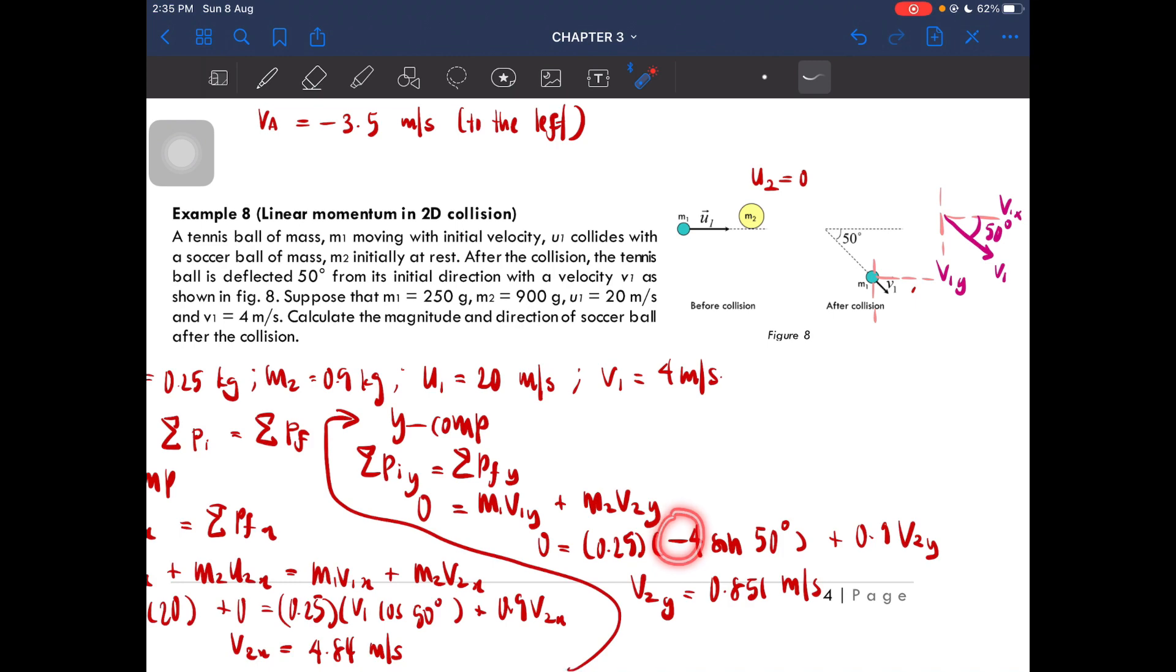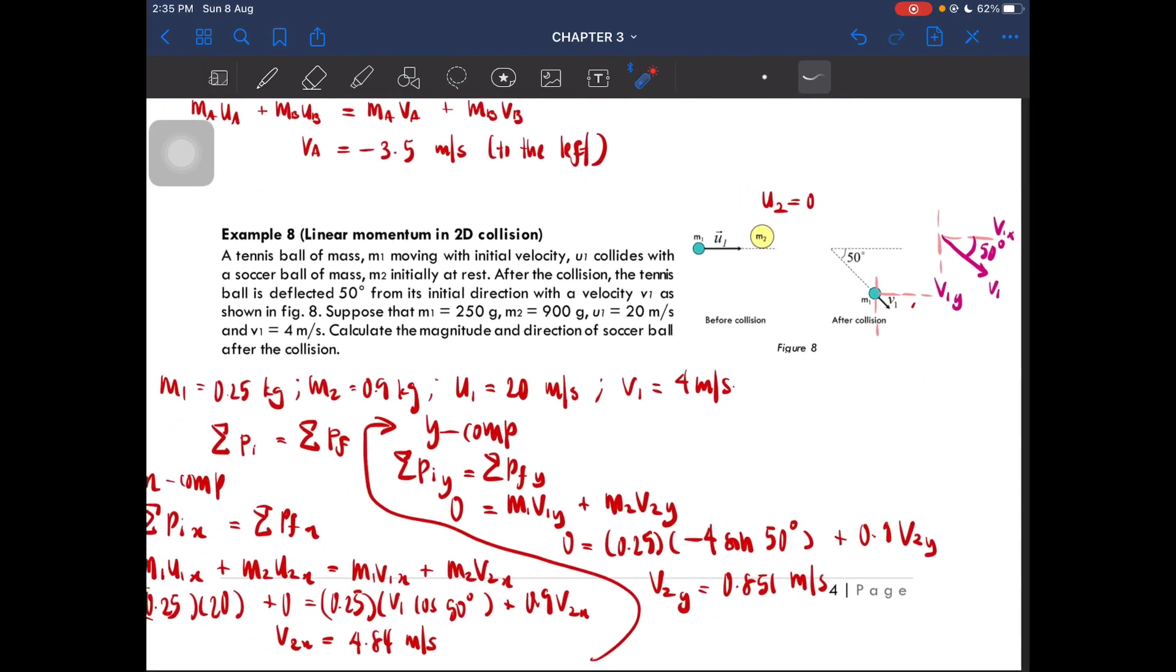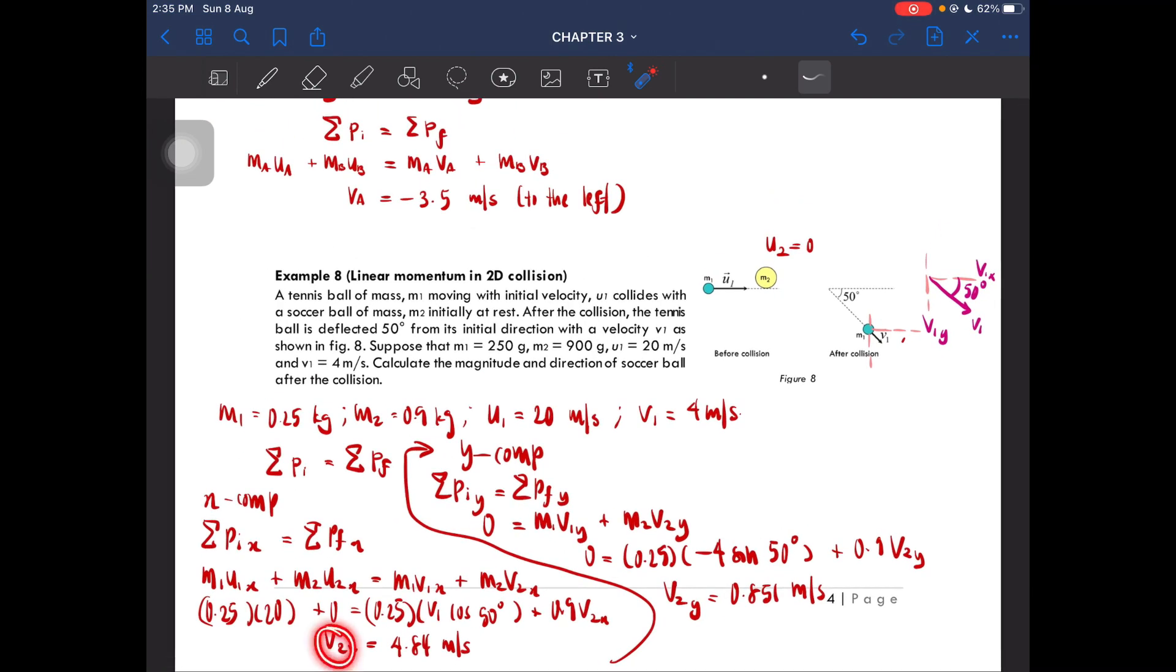Why did I put negative 4 here? Negative 4 sine 50 is because we can see that this velocity for mass one is pointing downwards like this, so that's why this is negative 4 sine 50 degrees. So the v2x and v2y, we cannot see it in the diagram, in this figure here. We have to calculate it based on this mass m1. We have to consider the direction for the final velocity of mass m1 here, mass one.